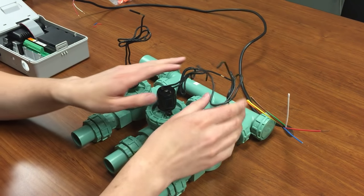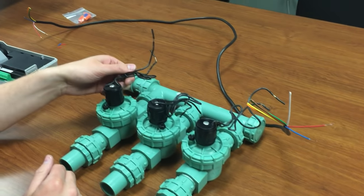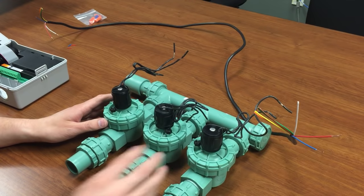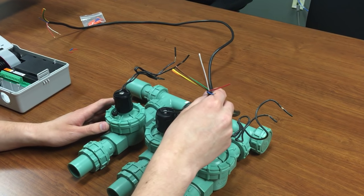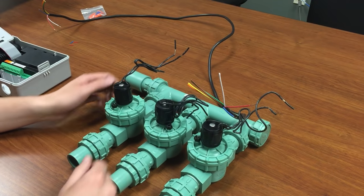Here we have a pre-assembled solenoid that Orbit makes, but this would of course apply to any valve solenoid system that you have. We've got some sprinkler wire here, and then we have a timer which we'll show you in just a second how to wire that up.